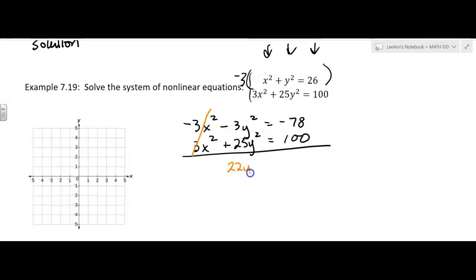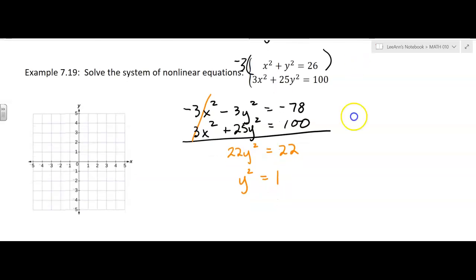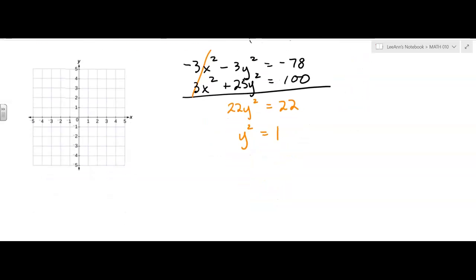And so we get 22 y squared equals 22. If I divide both sides by 22, I get y squared equals 1. And then to solve for y, I have to take the square root of both sides. But when I take the square root of both sides, I have to consider plus or minus.